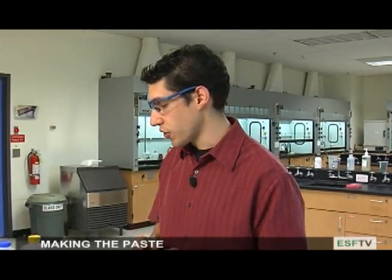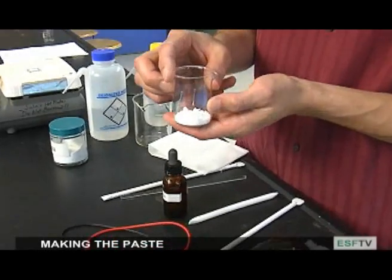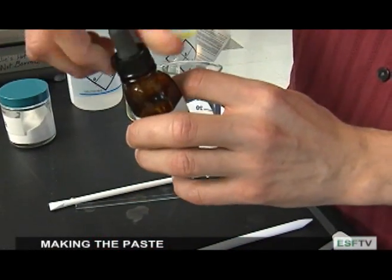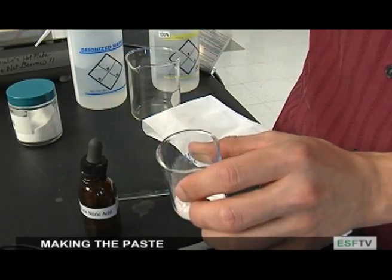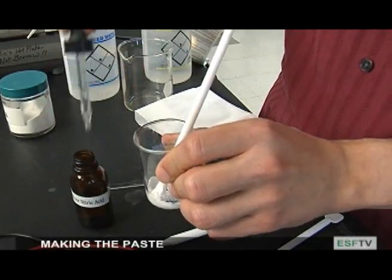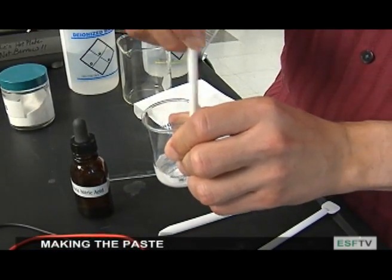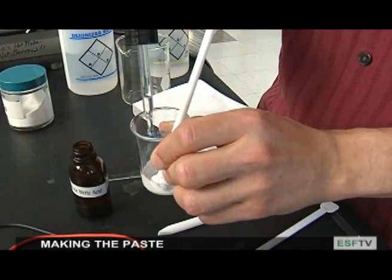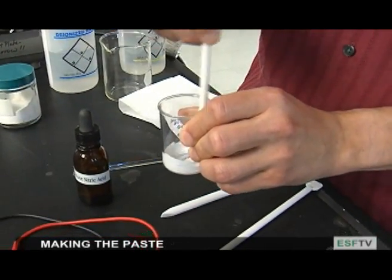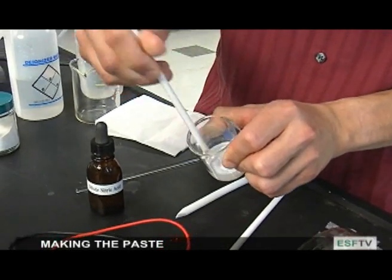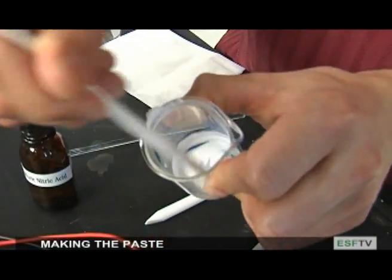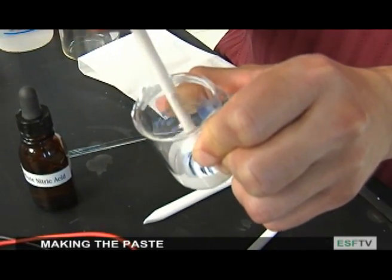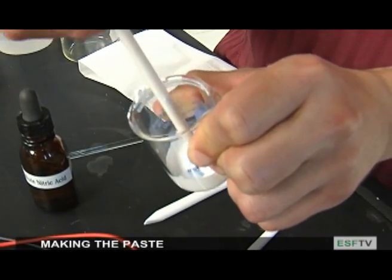The first thing we're going to do is make a paste using the titania. This titania is going to act as a conductor for the electrons. I've placed some titania paste inside this beaker and we're going to make a slurry using some dilute nitric acid. The slurry should be the consistency that it's a little thicker than water but thinner than paste. So I'm going to add some of the acid and slowly stir until we get the right consistency.